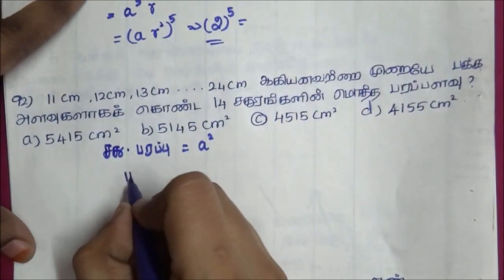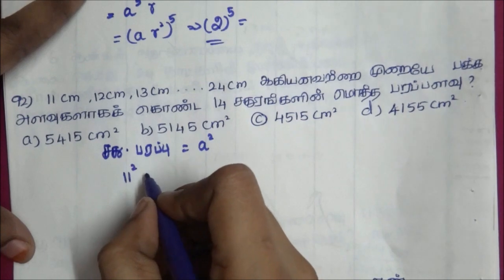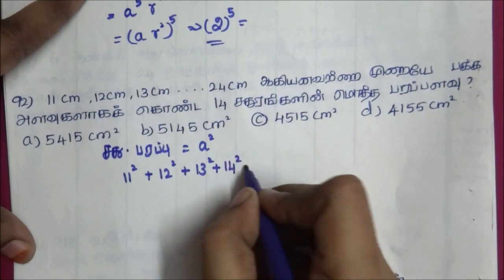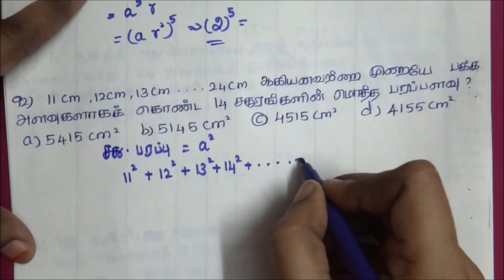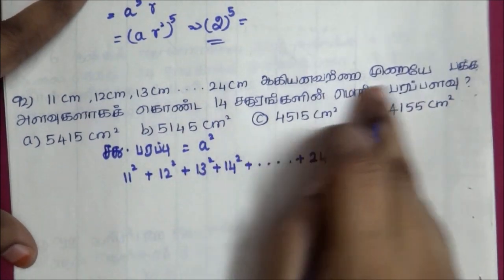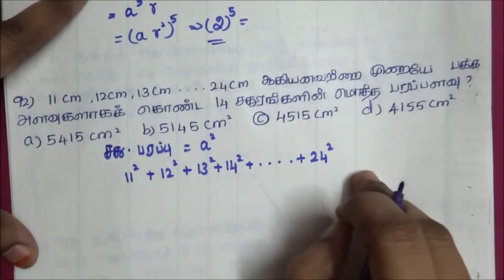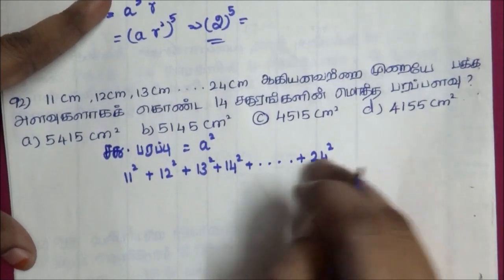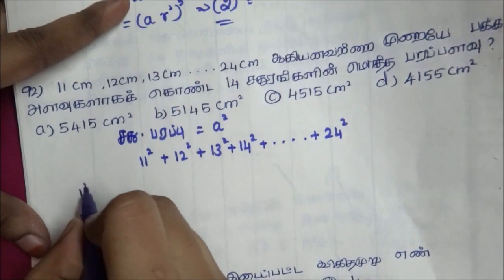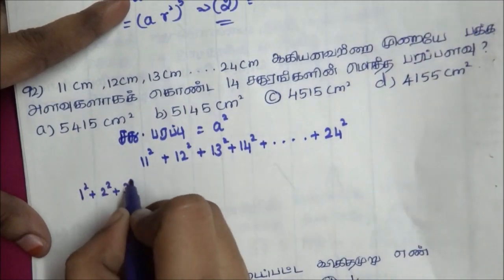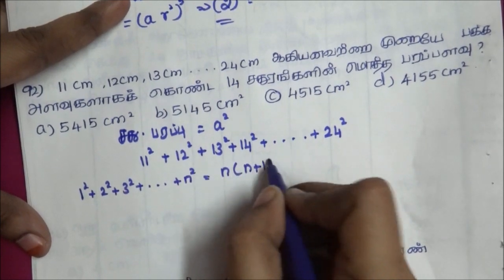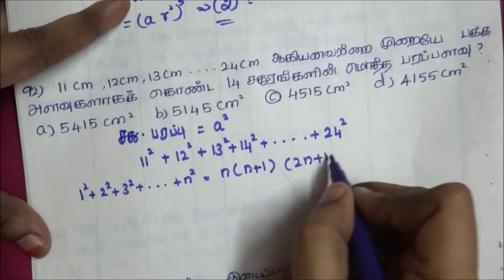We have 11 squared, 12 squared plus 13 squared plus 14 squared. This is how much it is — 14 times. The formula for 1 squared plus 2 squared plus 3 squared and so on up to n squared is: n(n+1)(2n+1) divided by 6.